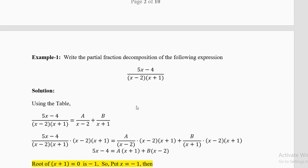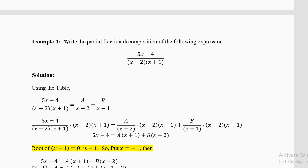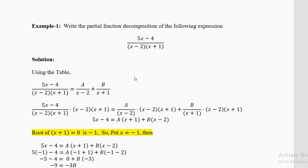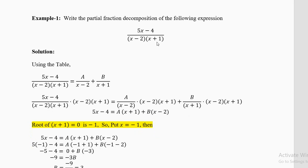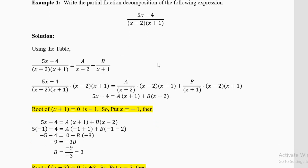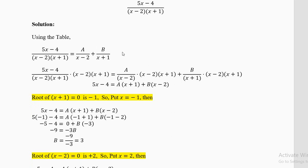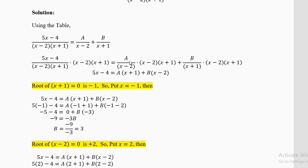Now let's do Example 1: write the partial fraction decomposition of (5x − 4) / ((x − 2)(x + 1)). From the table, the factors are non-repeating, so the structure is A/(x − 2) plus B/(x + 1). We assume this form and must calculate the values of capital A and capital B.